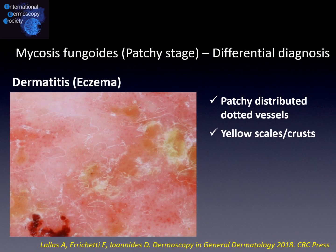Now let's see how dermoscopy may be helpful in distinguishing mycosis fungoides in its patch stage from clinically similar dermatoses. Dermatitis or eczema is one of the most important differential diagnoses, and differently from mycosis fungoides in its patch stage, it typically displays patchily distributed dotted vessels and yellow scales or crusts, which are due to the presence of spongiosis and hyperkeratosis.